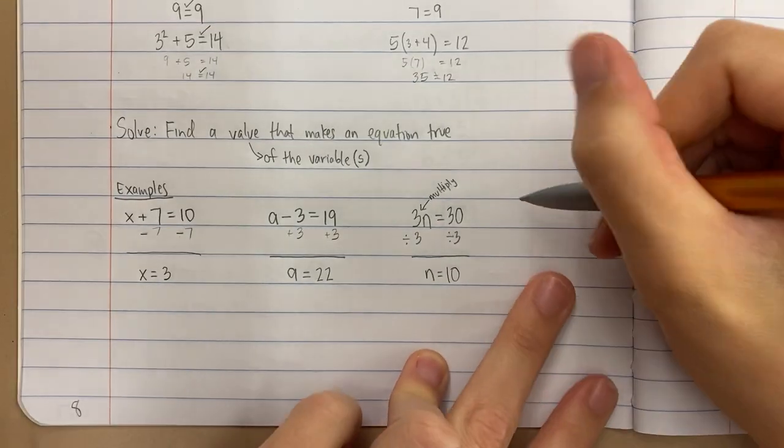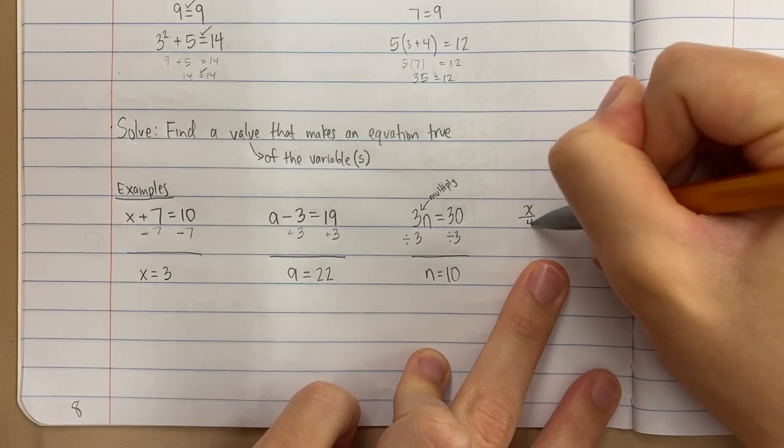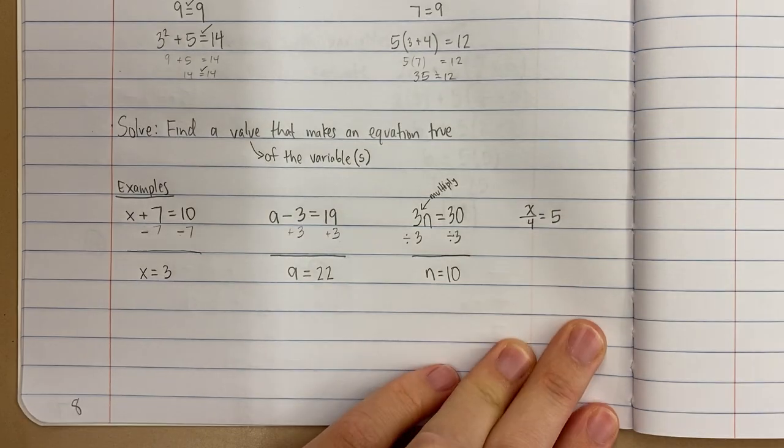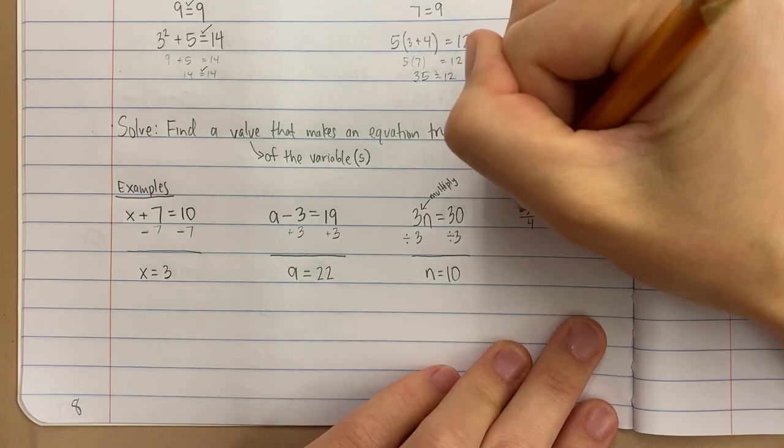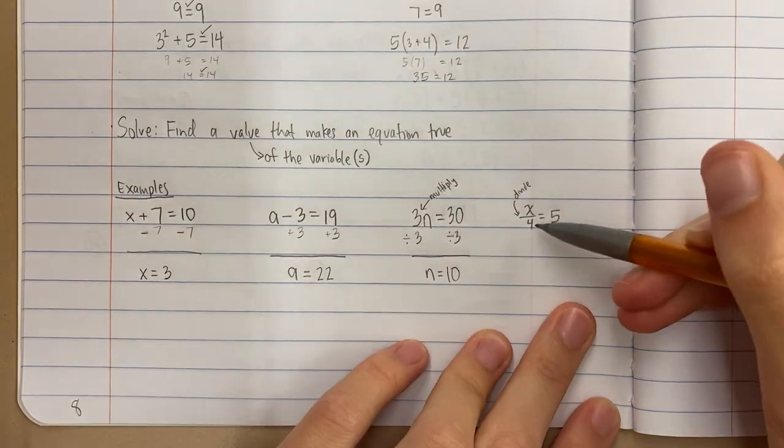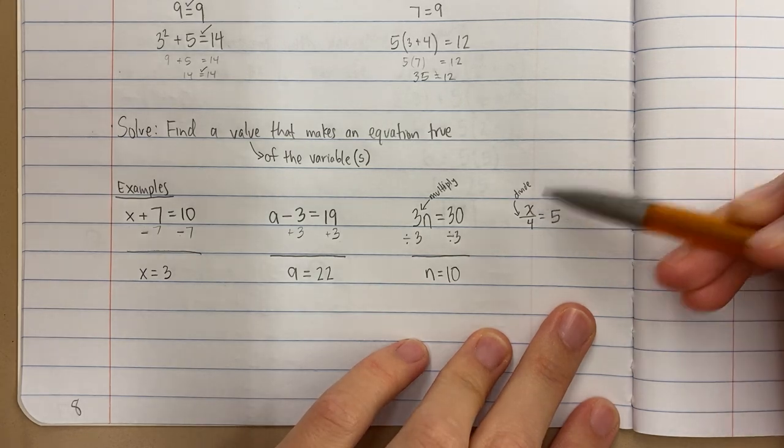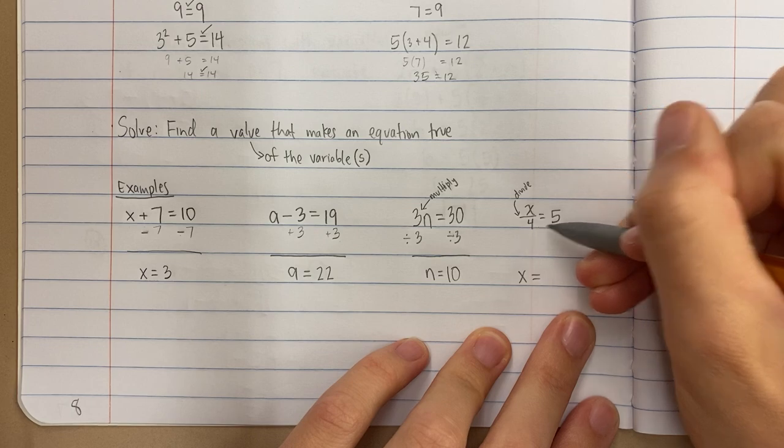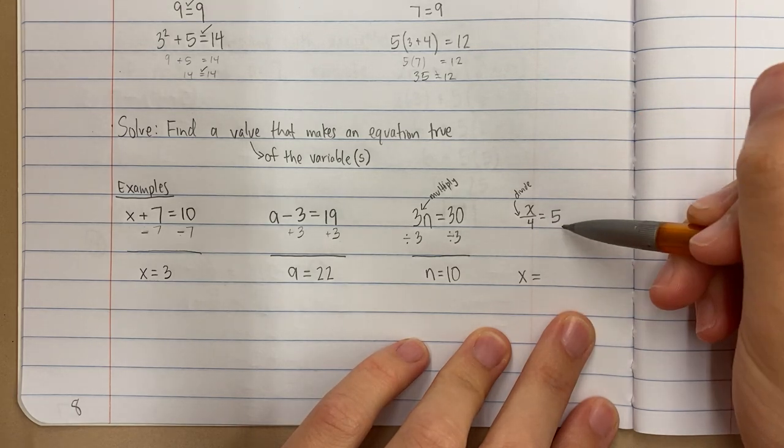Last example. x over 4 equals 5. This says x, what does this mean? This means divide. This says x divided by 4 equals 5. Some number x, when I divide it by 4, I get 5. What number divided by 4 gets you 5? So you might just think of it and say, 20 divided by 4 is 5.